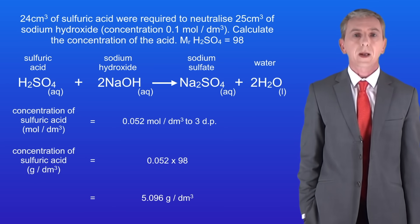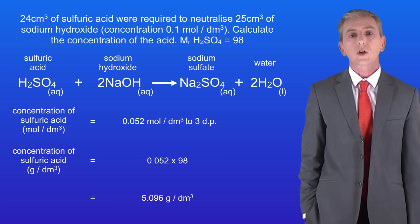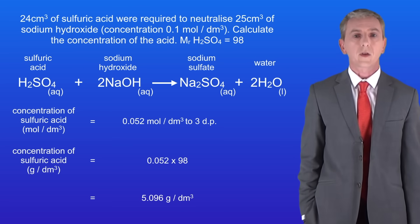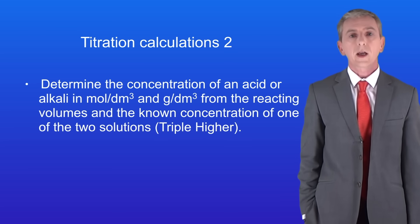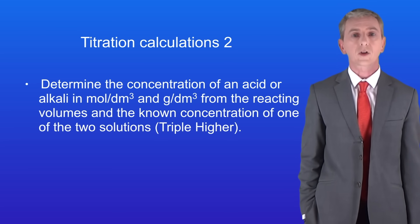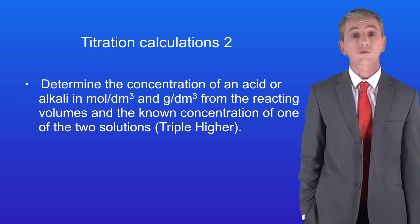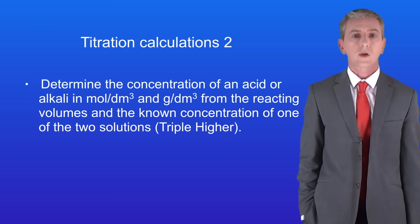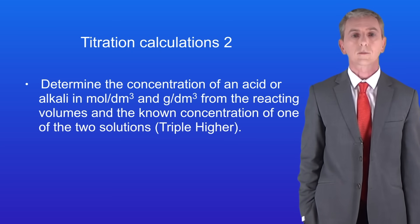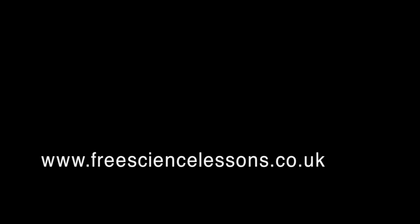Remember you'll find plenty more questions on titration calculations in my revision workbook and you can get that by clicking on the link above. Hopefully now you should be able to determine the concentration of an acid or alkali in moles per decimetre cubed and in grams per decimetre cubed from the reacting volumes and the known concentration of one of the two solutions.